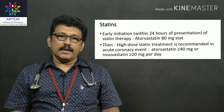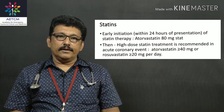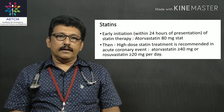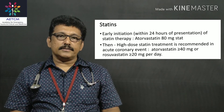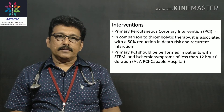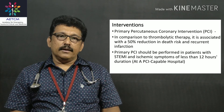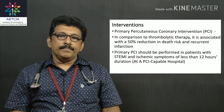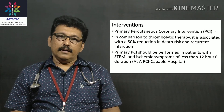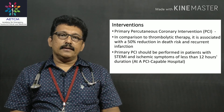The next drug in acute MI is a statin. The preferred drug is atorvastatin 80 mg as a loading dose, continued at 40 mg every day. If an interventional cardiac center is available, take the patient for primary percutaneous coronary intervention — angiogram and angioplasty — if the patient presents within 12 hours. Primary PCI is associated with a greater than 50% reduction in death compared with thrombolytic therapy.